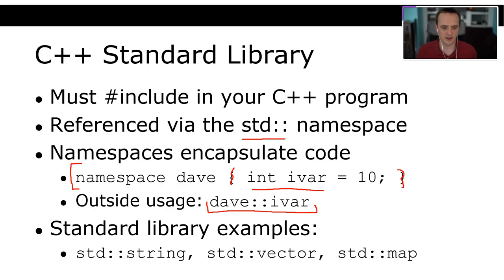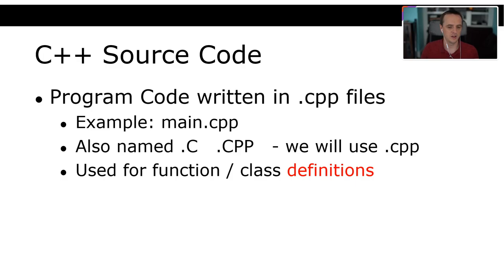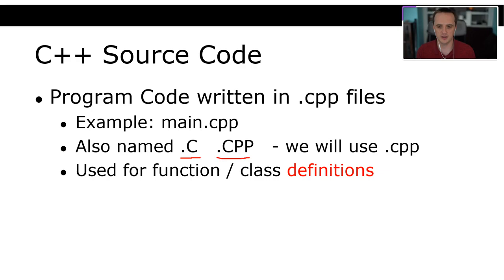Some examples from the standard library: std::string, std::vector, std::map. The program code is written in .cpp files — for example, main.cpp. There's a big difference from Java: in C++, the name of the file essentially means nothing. You could have a file called vector.cpp that contains a Student class. The naming is only for your bookkeeping. In this course we will be using the .cpp extension.